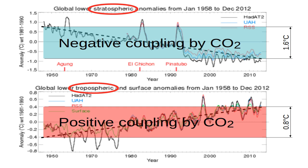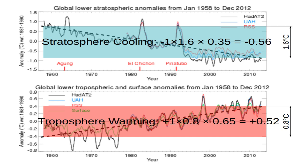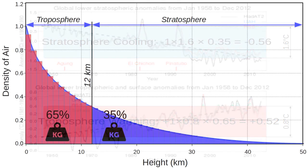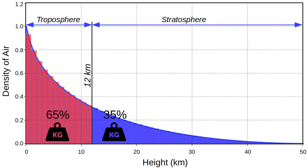And altogether, when we sum up this result, you'll see this calculation. Stratosphere cooling: this minus 1 stands for the negative coupling, so the temperatures go down. Minus 1 times 1.6 — and this 1.6 is the temperature drop over the last 50 years — times 0.35. And what is this 0.35? This is the weight of the stratosphere.